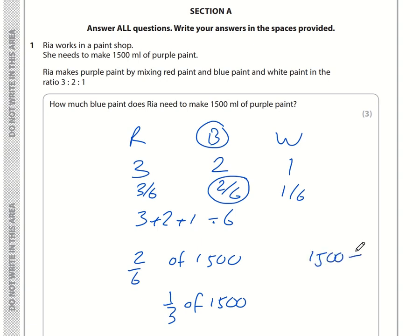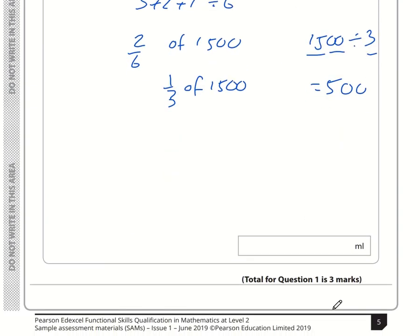What is 1 third of 1500? That is 1500 divided by 3. 15 divided by 3 is 5. So 1500 divided by 3 is 500. Therefore, the answer is 500ml.